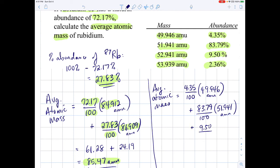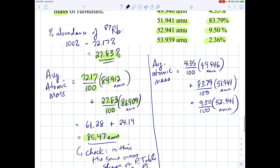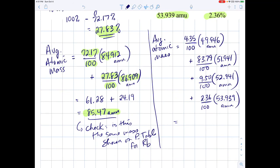But let's continue. The third isotope is 9.50 percent, multiplied by its mass, 52.941 AMUs, atomic mass units. And the last isotope, 2.36 percent. This guy has very low abundance, multiplied by its mass, 53.939 AMUs.